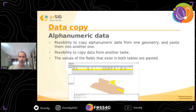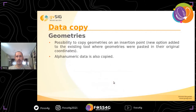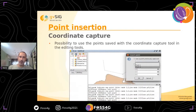About data copy, we have two new tools. Now we can copy alphanumeric data from one element to another — very useful when drawing a new element and wanting to keep the same table data as another element. Another data copy tool allows us to copy geometries at an insertion point by clicking on the view. We had the option to copy to original coordinates, but now we can copy at a specified insertion point. We can also capture and save coordinates to use in other tools such as editing or geoprocessing.